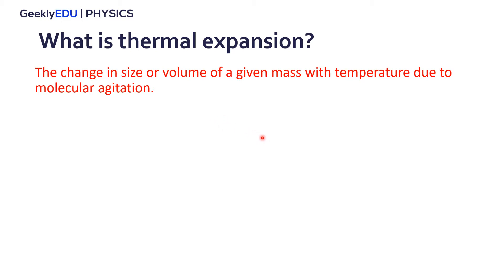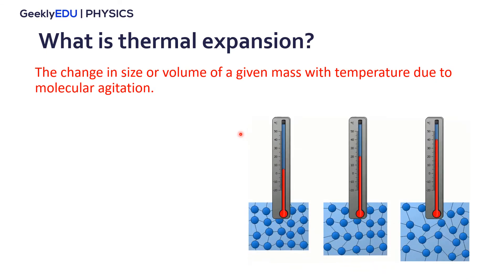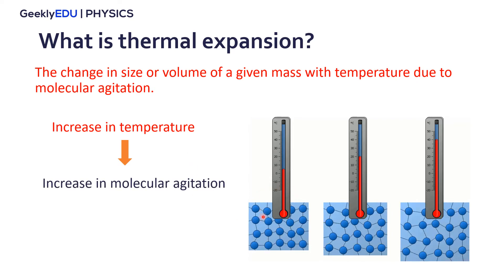A very simple example and very common is the thermometer. In a thermometer, we have an increase in temperature around the thermometer and then in the liquid. This increase in temperature leads to an increasing molecular agitation and this molecular agitation leads to an increase in the size or volume in the case of a thermometer.